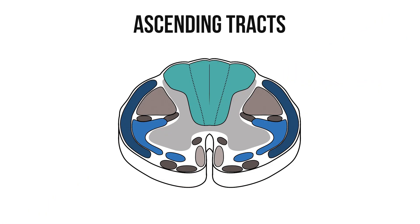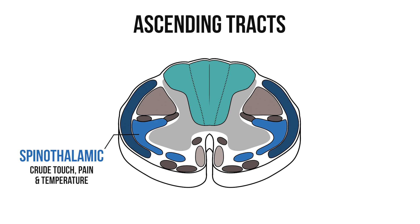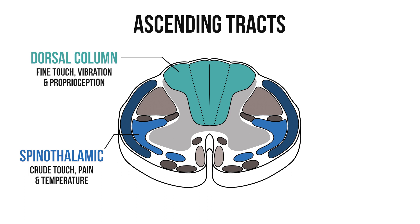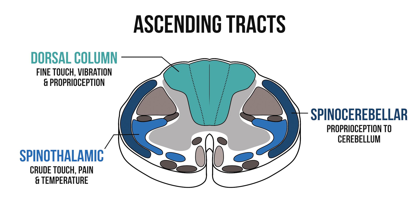Now, what about our ascending tracts? There are three major groups you should know about. The spinothalamic tract conveys information about crude touch, pain and temperature to the sensory cortex. The dorsal column conveys the more subtle sensations of fine touch, vibration and proprioception to the sensory cortex. And the spinocerebellar tracts carry proprioceptive information to the cerebellum, giving it the information necessary to help coordinate movements of the body.